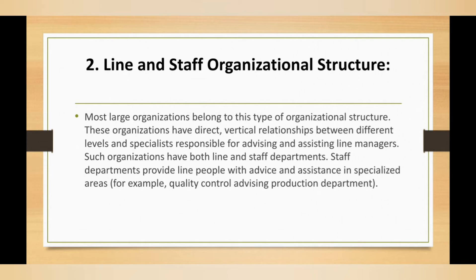The next one is the line and staff organizational structure. It often causes confusion — what is the basic difference between line and staff organization? In line organization there is a vertical relation: authority flows from top to bottom and responsibility flows from bottom to top. The same applies in line and staff organization, but there is an additional element: specialists. Here we have staff — meaning specialists or experts — who advise managers. They function as advisors, but it is not compulsory for managers to follow their advice.